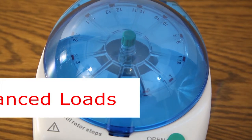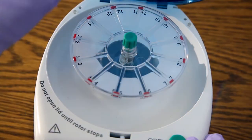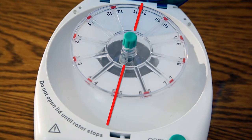Spin only balance loads where the tubes are placed opposite each other. Out of balance loads may damage the centrifuge and may produce improper sample separation. Load your tubes and use the digital controls to set time and speed.